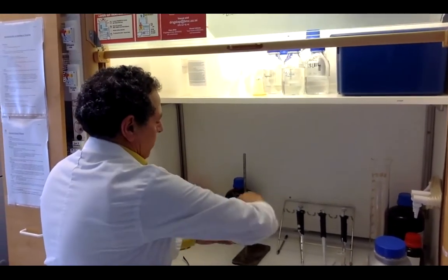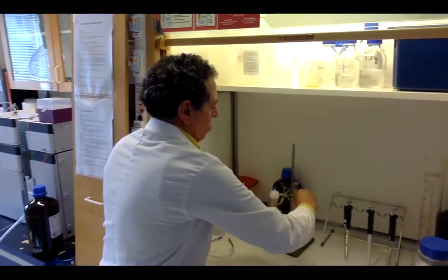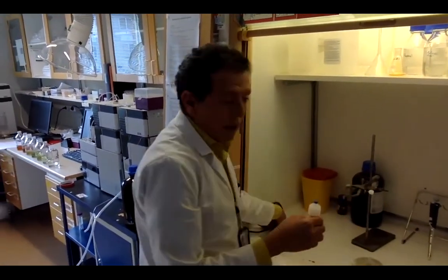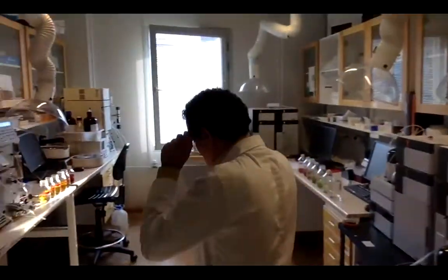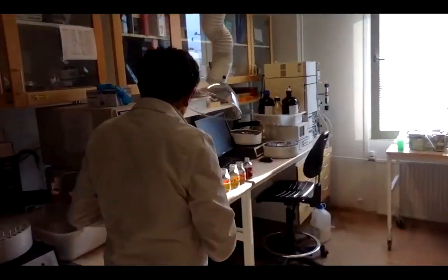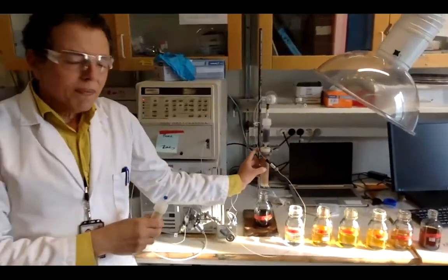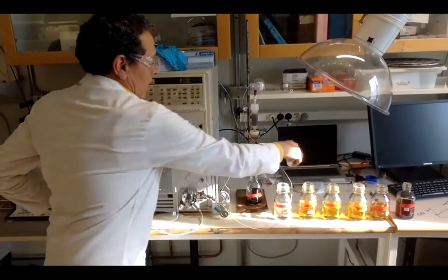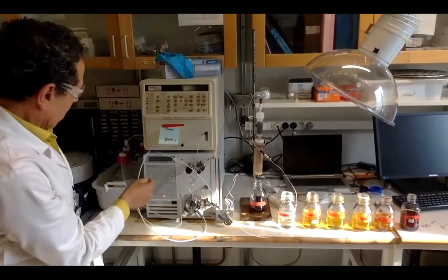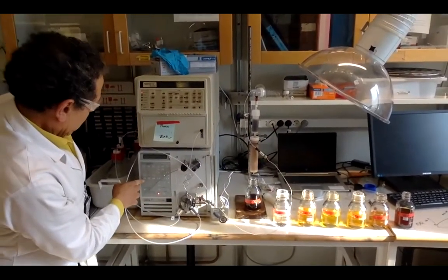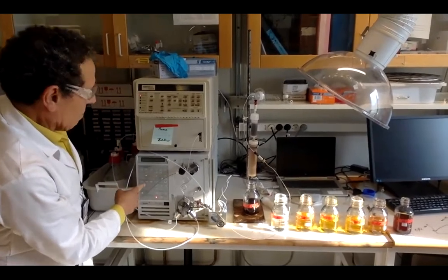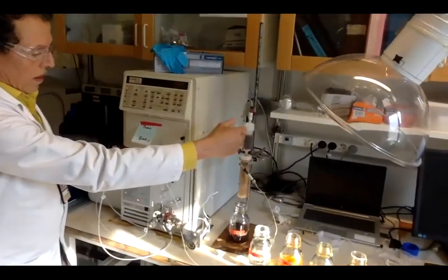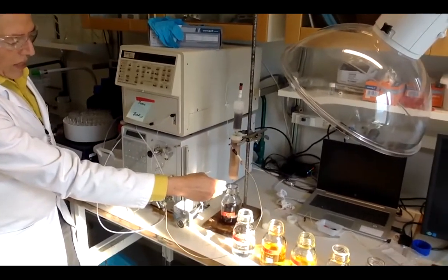Now the column is ready to be connected to the whole system. We connect it here. This is from our program to save time. Then you start the machine, and it will make the elution as you can see.